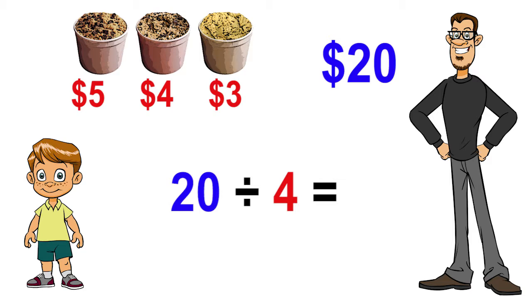Students should first recognize that they know the amount spent, which is $20, and they know the cost of the oatmeal raisin cookie dough, which is $4. When you know the whole amount and the group size but not the number of groups, repeated subtraction is an effective division strategy.